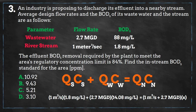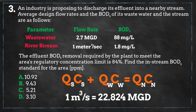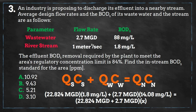We can't solve right now because we have two different units for flows — cubic meters per second and million gallons per day. Using a unit conversion, we now have the same units for flows. We plug this back into our equation, with million gallons per day for flow and milligrams per liter for concentration.